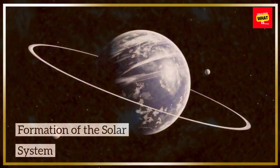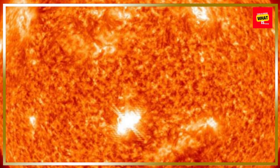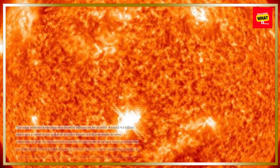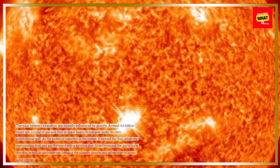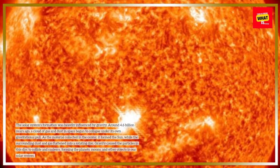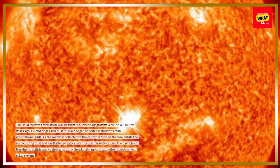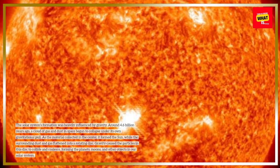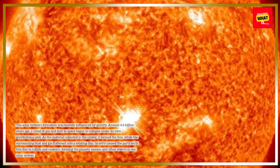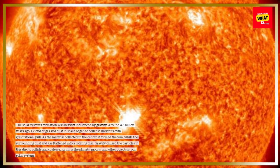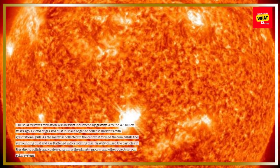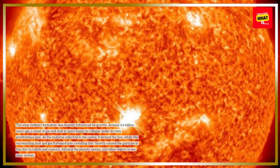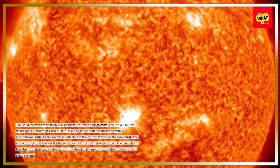The solar system's formation was heavily influenced by gravity. Around 4.6 billion years ago, a cloud of gas and dust in space began to collapse under its own gravitational pull. As the material collected in the center, it formed the sun, while the surrounding dust and gas flattened into a rotating disk.